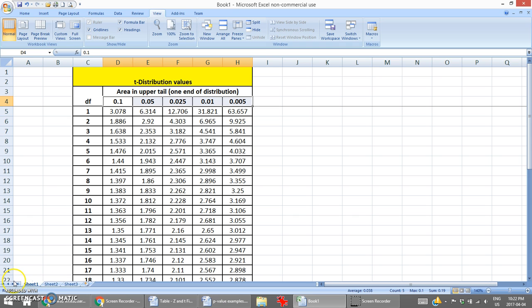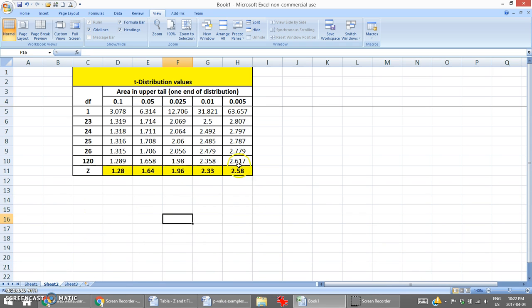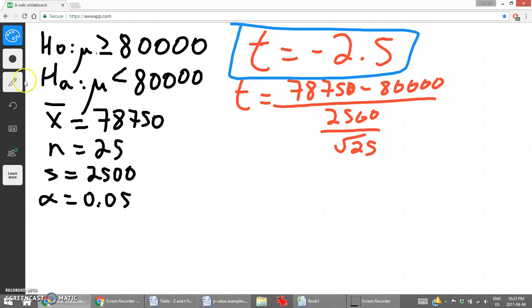What we can do is take a look at a t distribution value chart. So we'll copy this chart. We know that the sample size is 25, so the degrees of freedom is 24. So we need to be concerned about this row right here. So let's go to our whiteboard.